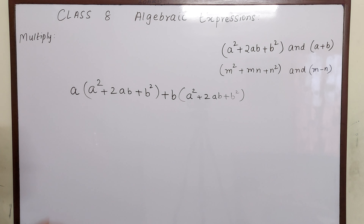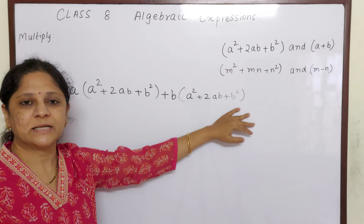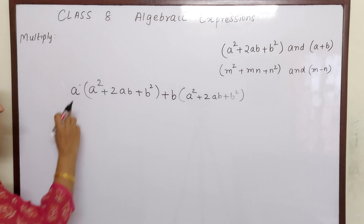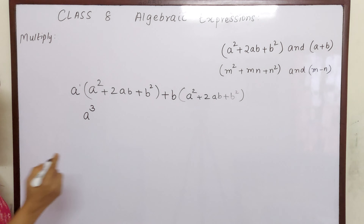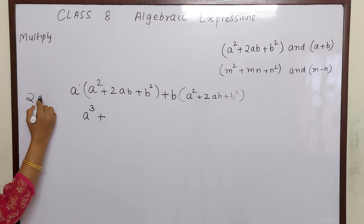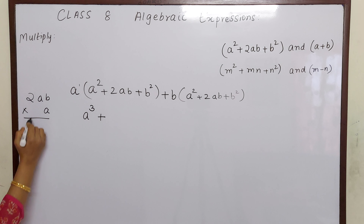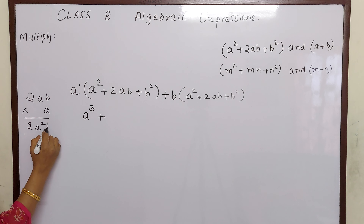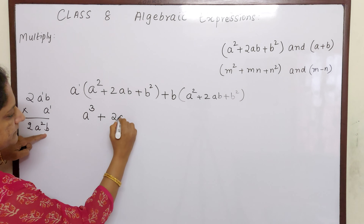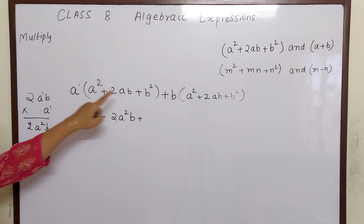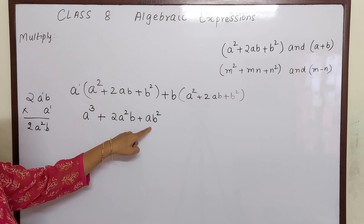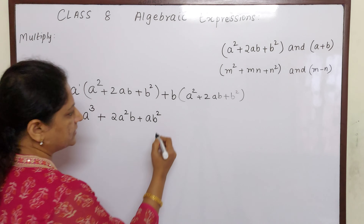One good thing here is all terms are having plus sign, so I don't have to think much about signs — everything will be plus. a into a² = a³. Plus 2ab into a: a¹ × a¹ = a², so 2a²b. Then a into b²: since the bases are different, we write it separately as ab². Because the base of a and base of b are different, you cannot add their powers.